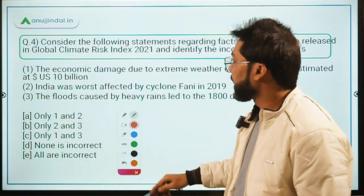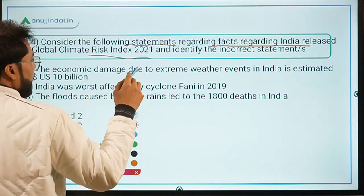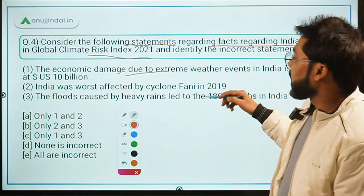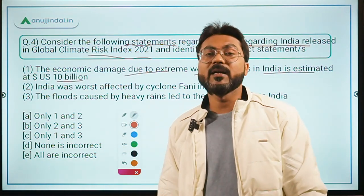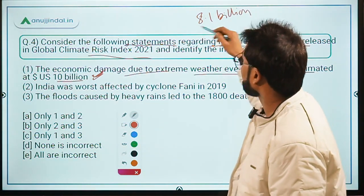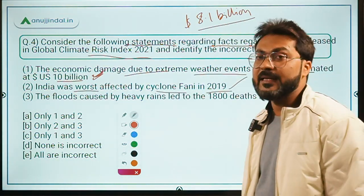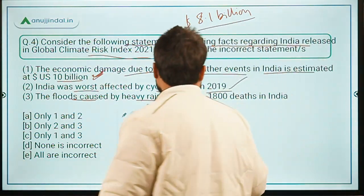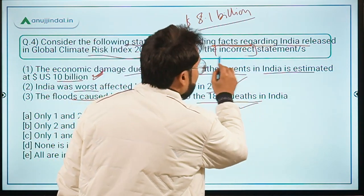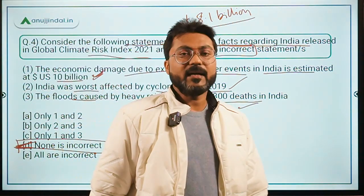Question four is also based on this index and asks us to identify the incorrect statement about India. Statement one — economic damage due to extreme weather events in India is estimated at US $10 billion — is correct. Do not confuse this with the $8.1 billion caused by Cyclone Fani alone; $10 billion is the overall figure. Statement two — India was worst affected by Cyclone Fani in 2019 — is correct. Statement three — floods caused 1,800 deaths and displacement of 1.8 million people — is also correct. Since no statement is incorrect, Option D is the correct answer.